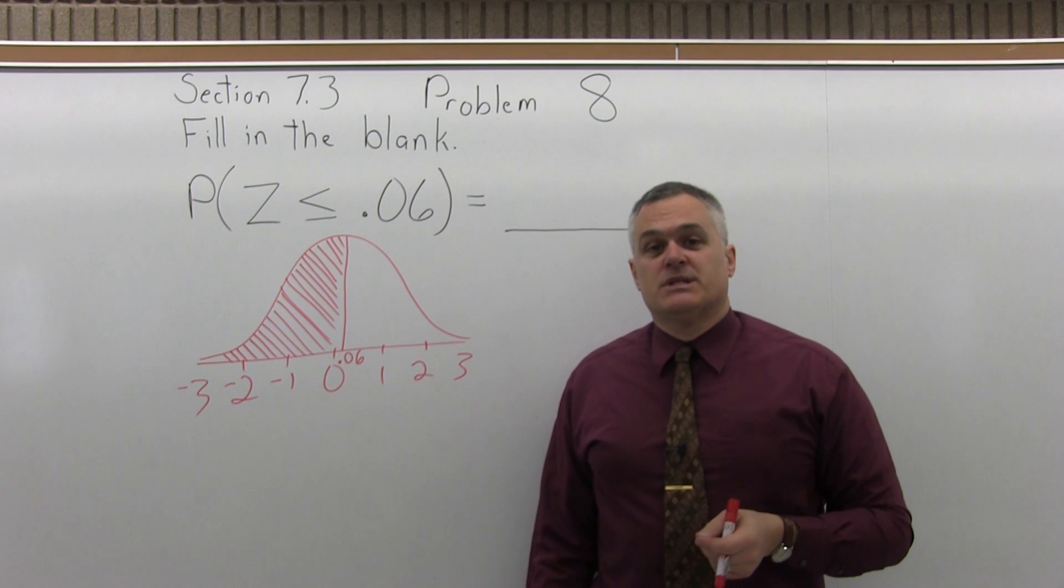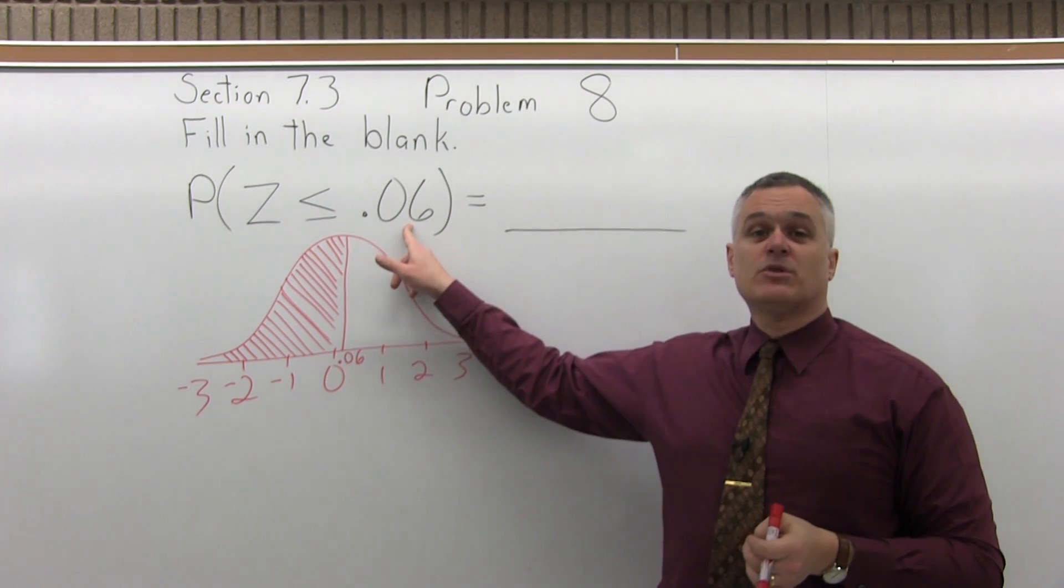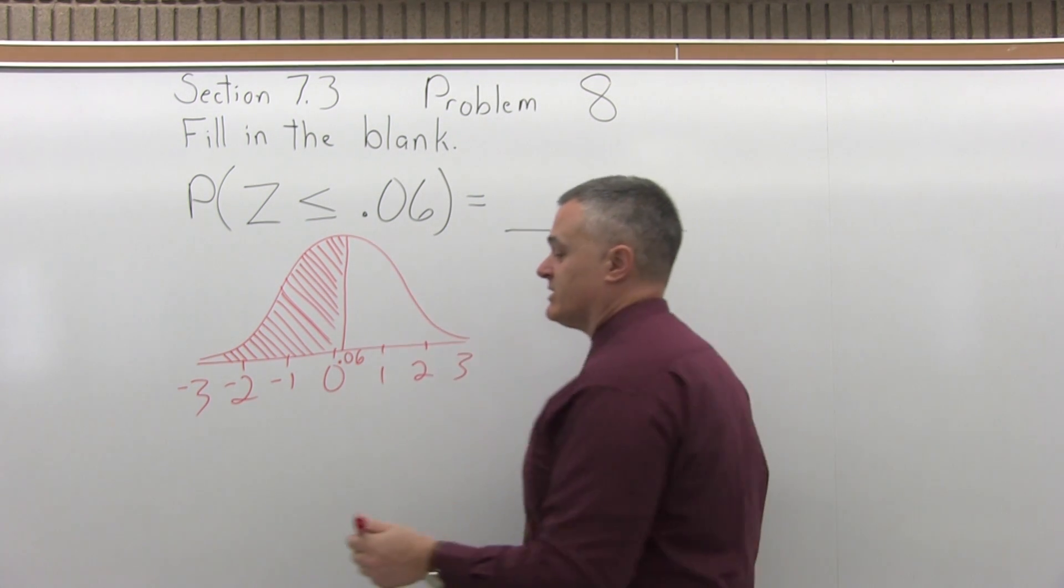So we want to look up 0.06 on our standard normal chart. First, write the number to look up so that it has two places after the decimal. We already have two places after the decimal. That's good.